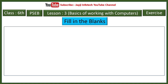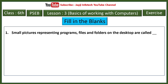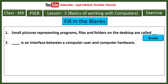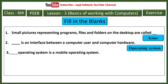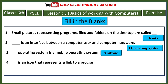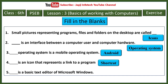Fill in the blank for lesson three. Small pictures representing programs, files, and folders on desktops are called icons. Operating system is an interface between a computer user and computer hardware. Android operating system is a mobile operating system. Shortcut is an icon that represents a link to a program. Notepad is a basic text editor of Microsoft Windows.